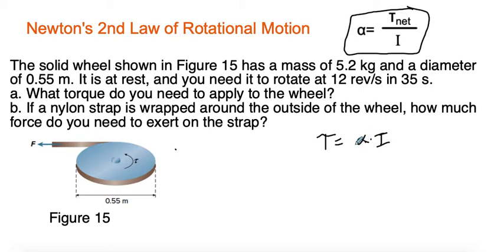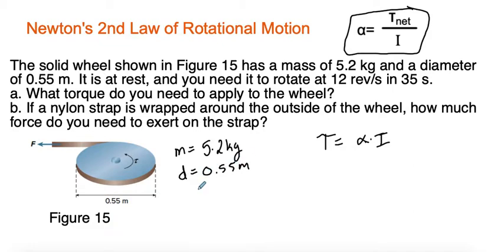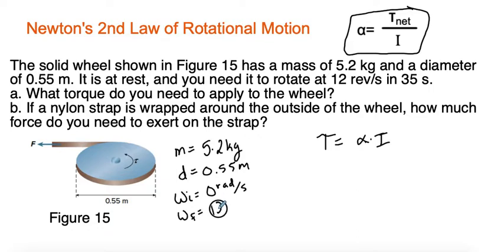Let's work through this problem. A solid wheel in figure 15 has a mass of 5.2 kilograms and a diameter of 0.55 meters. It's at rest, so the initial angular velocity is 0 radians per second, and we need to rotate it at 12 revolutions per second in 35 seconds.